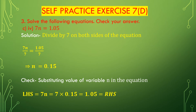Now we solve question number 4, bit b: 7n = 1.05. Dividing both sides by 7, the 7s cancel and we get n = 1.05 divided by 7, which is 0.15. So n = 0.15.